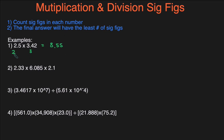Then we just see which one is smaller. Two is smaller than three, which means our final answer should have two sig figs. So I'm going to underline the second sig fig — this is the first sig fig, and then this is the second sig fig. Then you have to see whether you need to round that sig fig up or not, so you look at the number next to it. If it's five or greater, you round up. Since this is five, we're going to round this up to 8.6 — that'll be the correct answer with two sig figs.